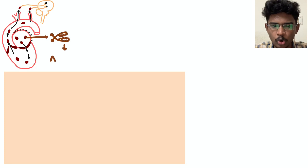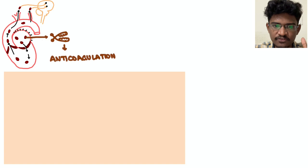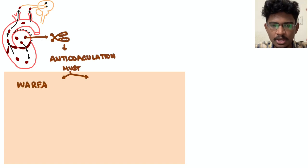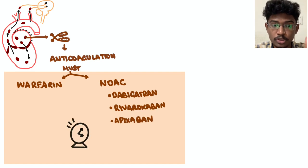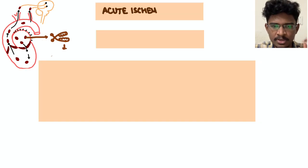Now in acute ischemic stroke there is no role of anticoagulation, we will just give antiplatelets. But here if you find it is due to some clot present in the atrium which will be continuously showering clots embolizing to the brain, you must give anticoagulation.